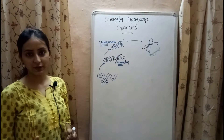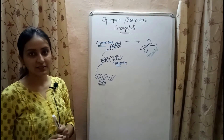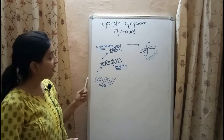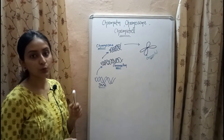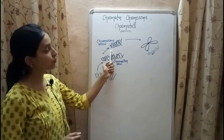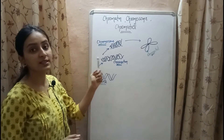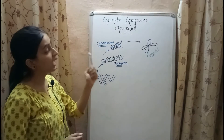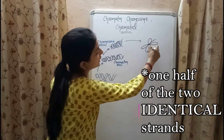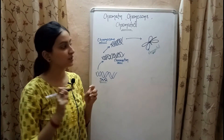To revise everything: DNA is the double helical structure present inside the nucleus of the cell. DNA along with histone proteins forms complex structures known as chromatin. Chromatin on condensation during cell division forms chromosomes, and one half of a single strand of a replicated chromosome is known as a chromatid.